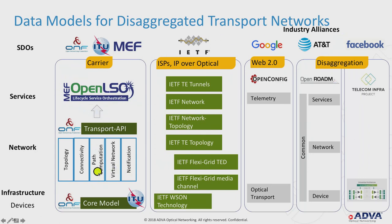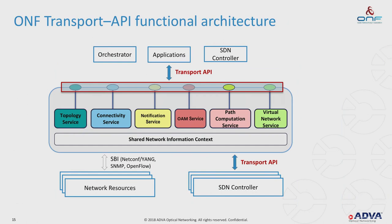In addition to standardization bodies, there are industry alliances — Google, AT&T, and Facebook. They do not specify their own models but rather seek agreement on models from others and integrate them. The Transport API controller has a network information context from directly attached devices and subtended subdomain controllers, and uses the same Transport API toward northbound applications — enabling a hierarchical approach. All these data models are published in the open domain and developed in community.